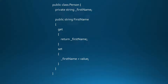This class also has a property called FirstName. It will be used to access and modify the private field. It defines a GET method and a SET method. The GET method is used to access the field, and the SET method is used to modify the value of the field.